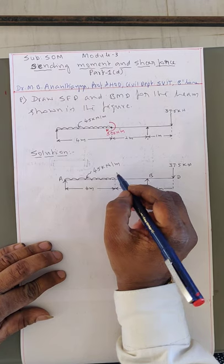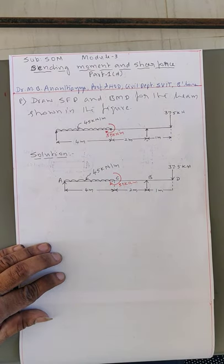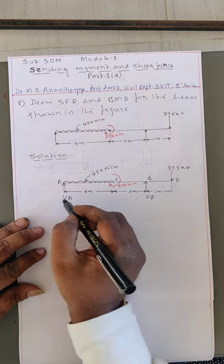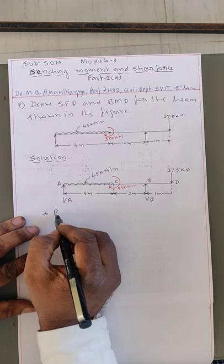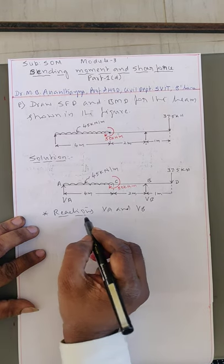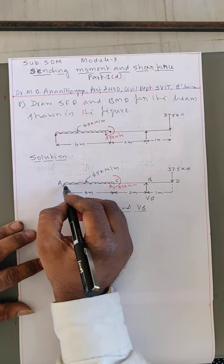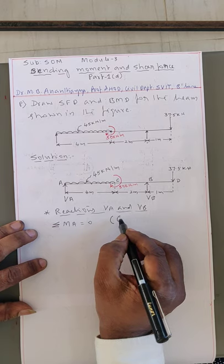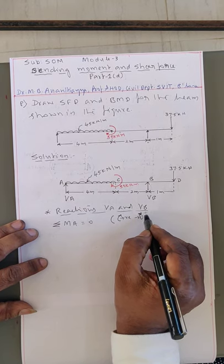Now we will do the solution. First, our step is to calculate the reactions VA and VB — how much load comes on each support. We will apply the fundamental static equations. Sign convention: all clockwise rotations are taken as positive, and all anti-clockwise rotations are taken as negative.